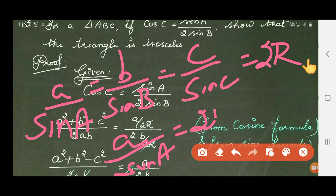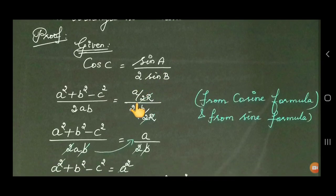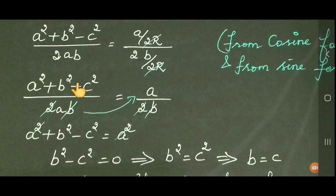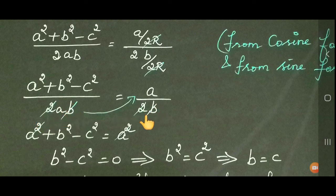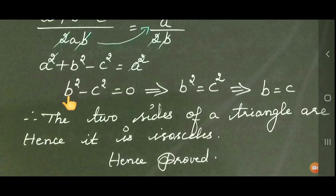Substituting sin A as a over 2R and sin B as b over 2R, the 2R gets cancelled. So the right hand side becomes a divided by 2b. Now comparing: on the left hand side we have A square plus B square minus C square over 2AB, and on the right side a over 2b. The 2 cancels, giving A square plus B square minus C square over AB equals a over b.